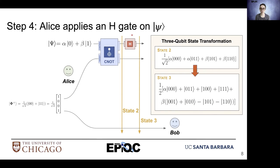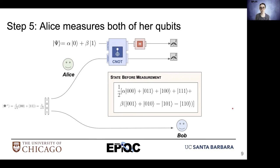Because we insert the Hadamard operation — our superposition operation — our state expands to include a lot more basis states. We have four terms for alpha and four for beta, with some phase introduced for the case of beta. In step five, Alice will measure her qubits. Here we have this state before measurement.